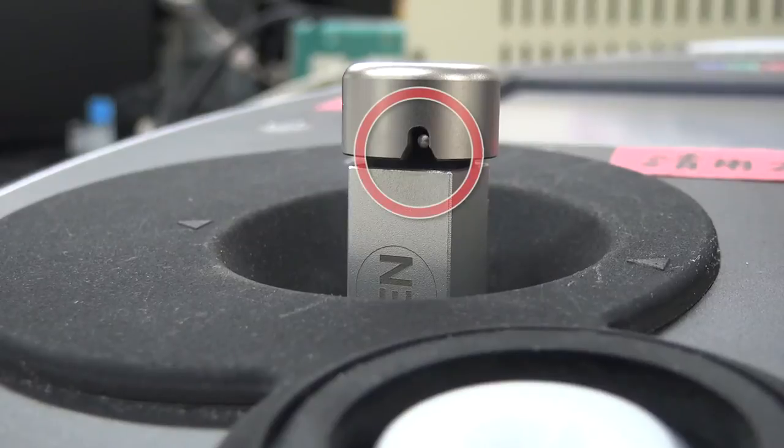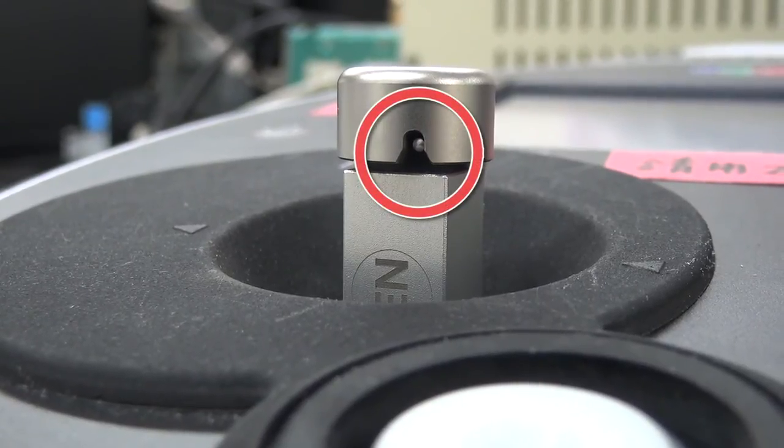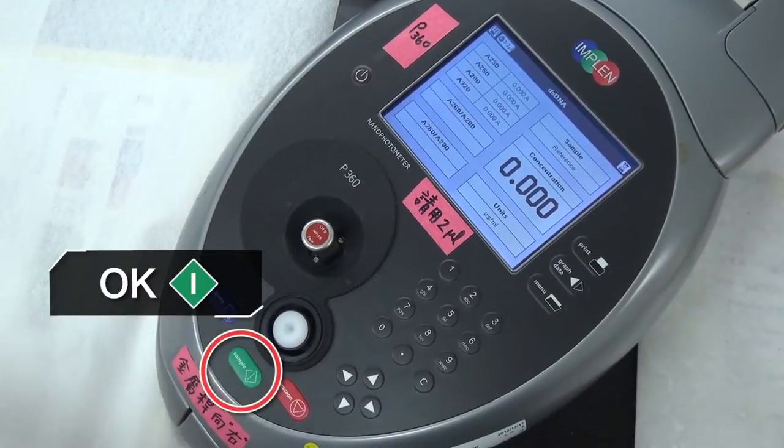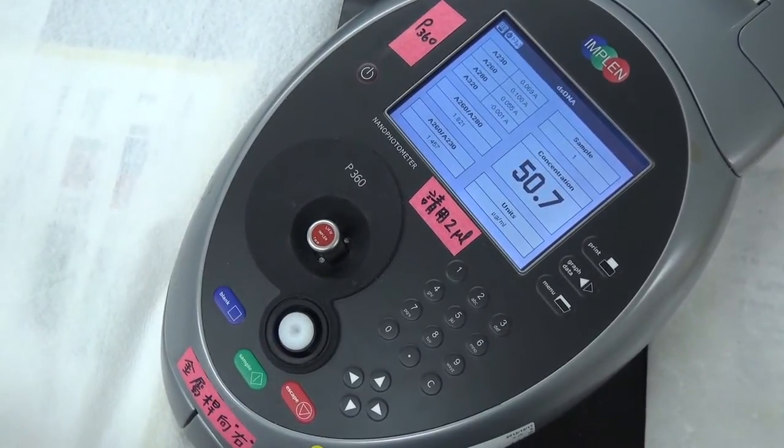13. Put the lid on. Make sure the notch of the lid perfectly sits on the metal bar to form a closed space. 14. Press OK to start measuring and wait for the value to stabilize.